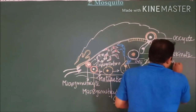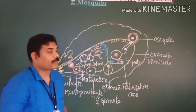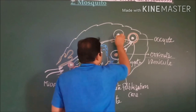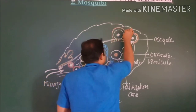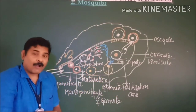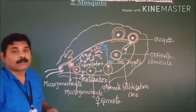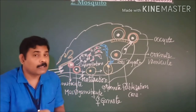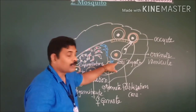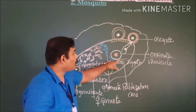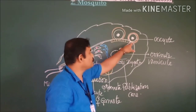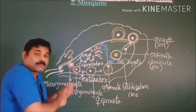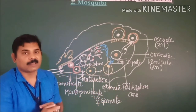The oocyst gradually increases in size within the cyst layer. An important point in the entire life cycle of Plasmodium: the parasite is in a diploid condition in only two stages — the zygote and the ookinete. The oocyst is also in a diploid condition. Only these stages are diploid; rest of all stages of the Plasmodium parasite are in a haploid condition.